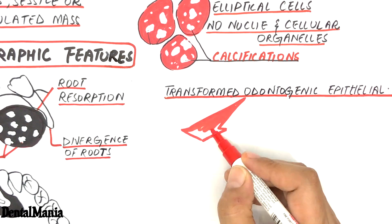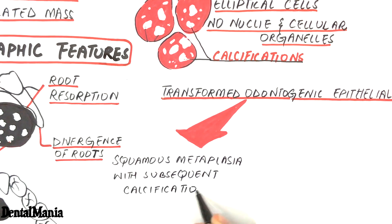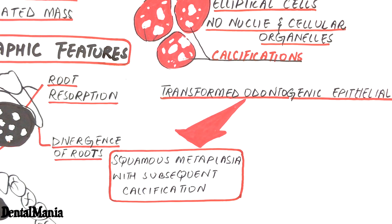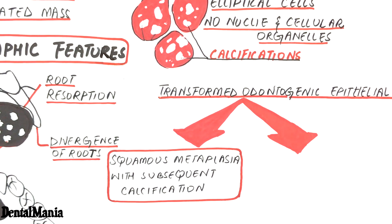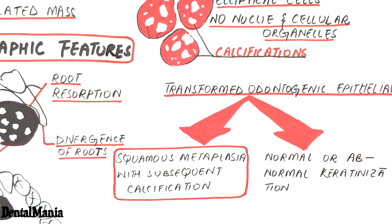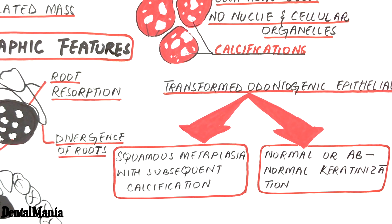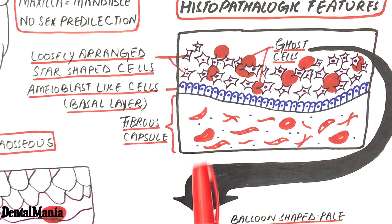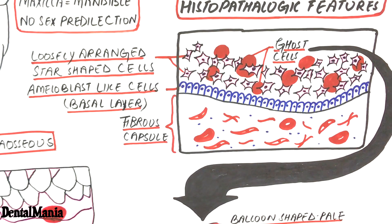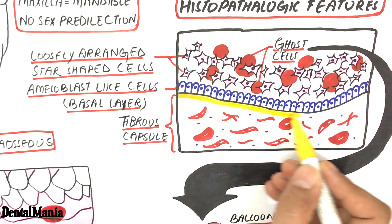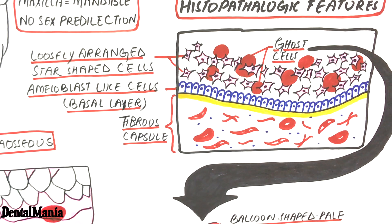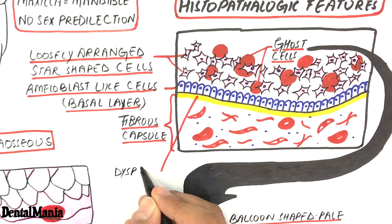Some believe that this cellular transformation represents squamous metaplasia with subsequent calcification caused by ischemia. Others consider these cells to represent different stages of normal or abnormal keratinization. The ameloblast-like basal cells of the lining epithelium may stimulate the underlying connective tissue cells to differentiate into odontoblast-like cells, resulting in the formation of dysplastic dentin or dentinoid lying just beneath the basal layer.